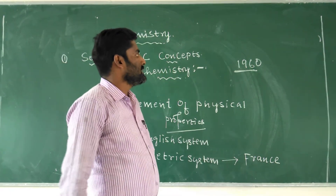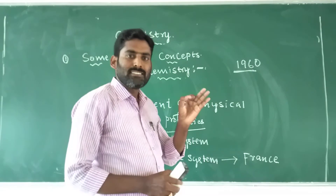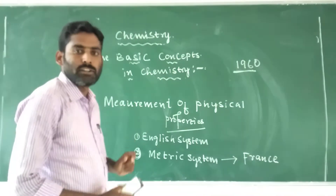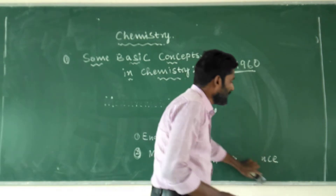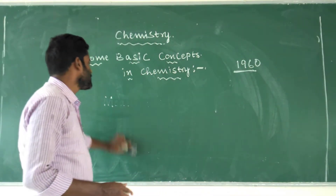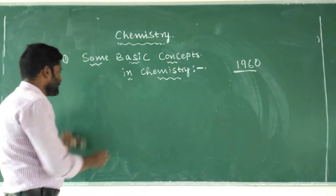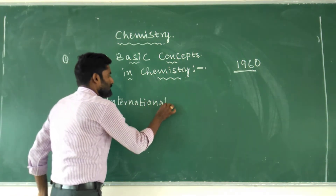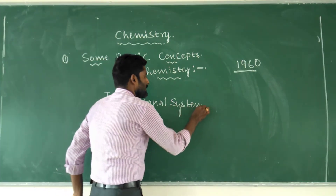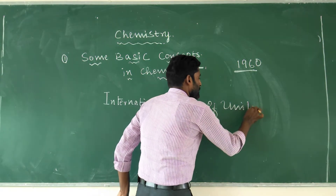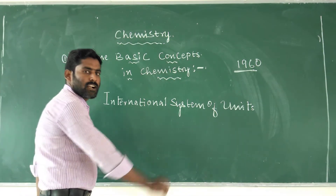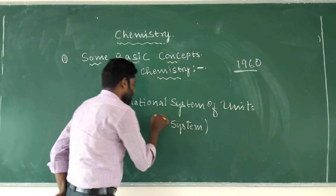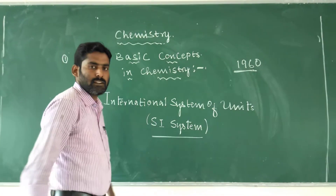After the year 1960, a standard system of measurement of physical properties of matter was introduced. This standard system is called the International System of Units, commonly known as the SI system. The English system and metric system were replaced by the SI system.